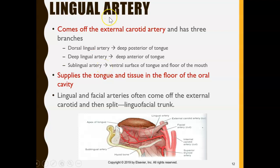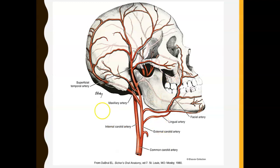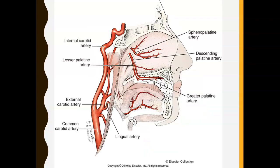So overall, the lingual artery supplies the tongue and the tissue in the floor of the mouth — the top of the tongue, the bottom of the tongue, and even the floor of the mouth. The lingual artery branches off from the external carotid artery and supplies the entire tongue area.